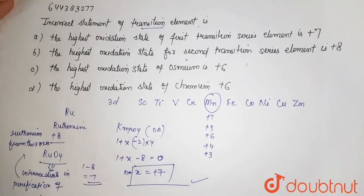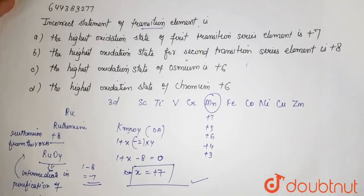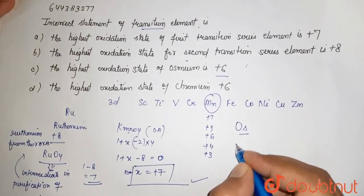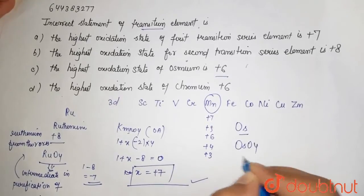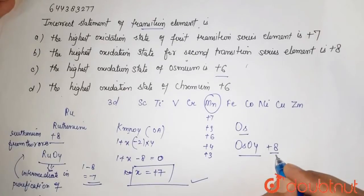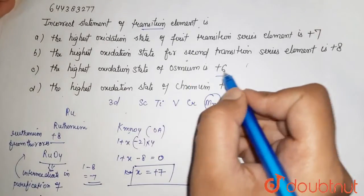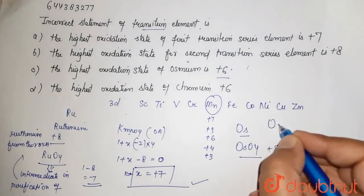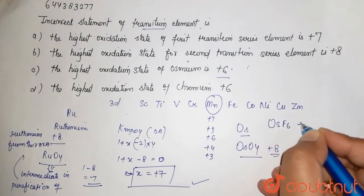Then we have the highest oxidation state of osmium. The statement says +6. Well, osmium forms OsO4, which has +8 oxidation state. It also forms OsF6, where it is in +6